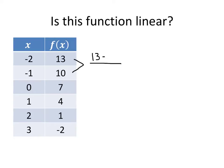For the first two pairs of points, the change in y is going to be 13 minus 10, and the change in x is going to be negative 2 minus negative 1. On the top we get 3, and negative 2 minus minus 1 turns out to be negative 1, so our average rate of change between that pair of points is negative 3.